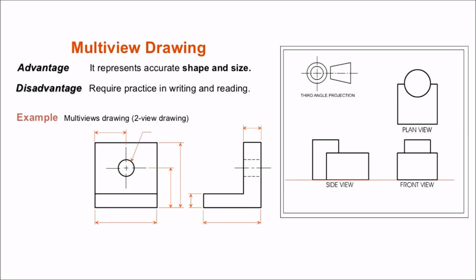Coming up to the multi-view drawing. It represents accurate shape and size and requires practice in reading and writing. In this type of drawing, we represent the object in different views. For example, the third angle projection of the sheet contains the plan view, front view and the side view of the object.